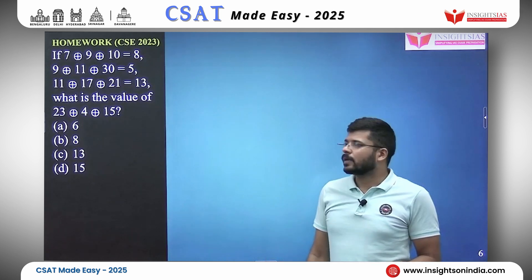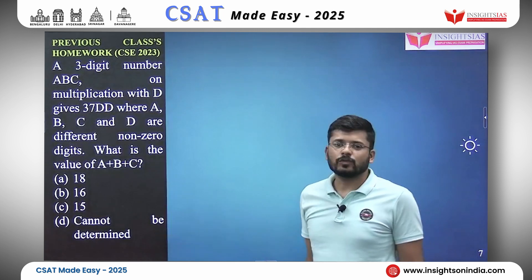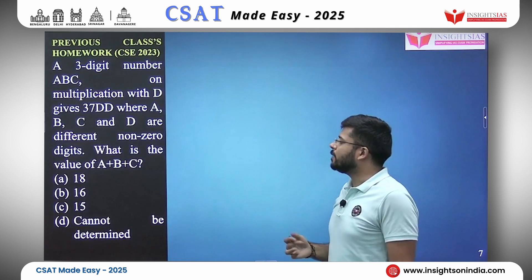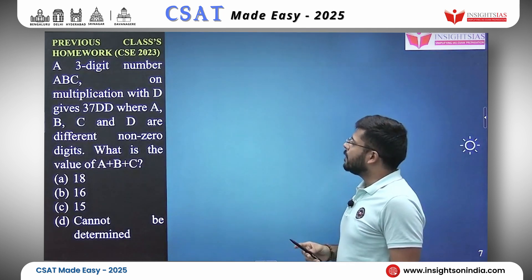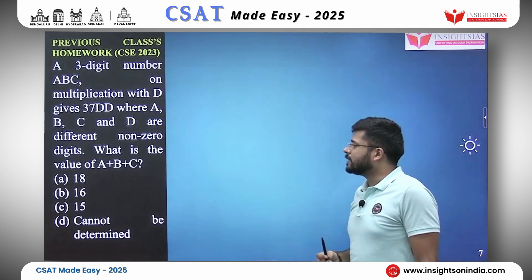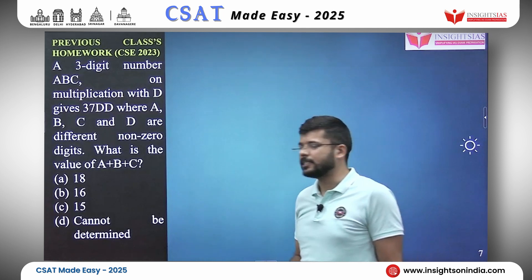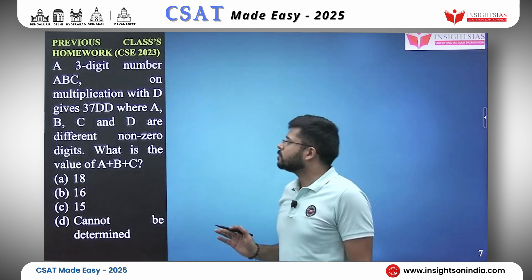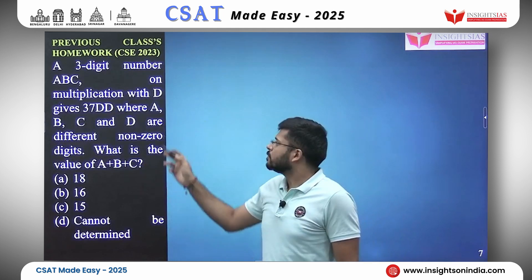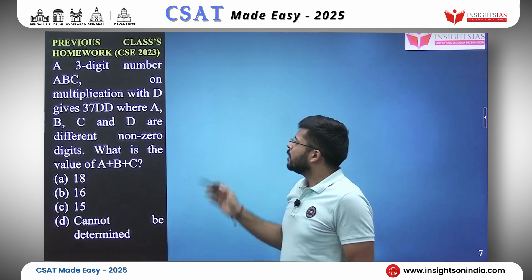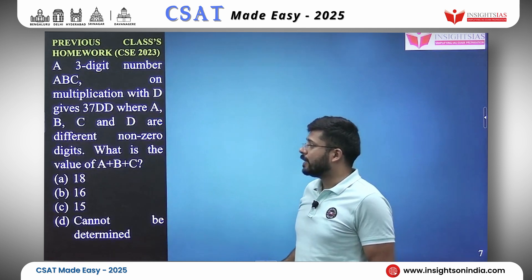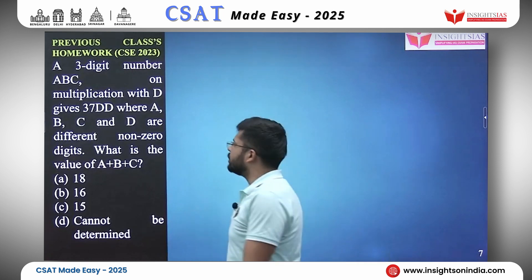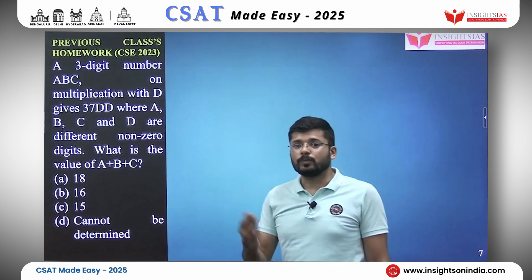Now it is time to answer the previous class's homework question, which was on the number system. A three-digit number ABC, on multiplication with D, gives 37DD, where A, B, C, and D are different non-zero digits. What is the value of A plus B plus C? First let us understand the question.